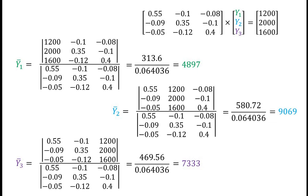And finally, the value of Y3, that is Y3 bar, is found as 7333. This is how we find equilibrium national income of all three economies using the techniques of matrix algebra. Thank you.